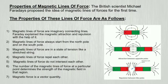Magnetic lines of force repel each other. Magnetic lines of force do not intersect each other. The number of magnetic lines of force at a particular point determines the strength of the magnetic field in that region. Magnetic force is a vector quantity.